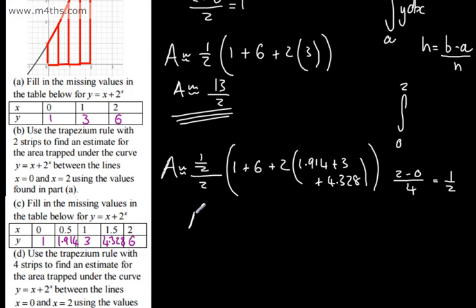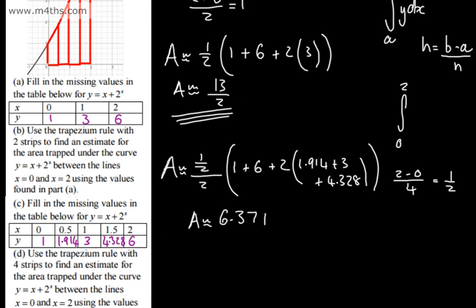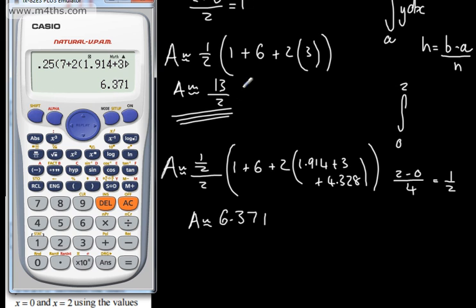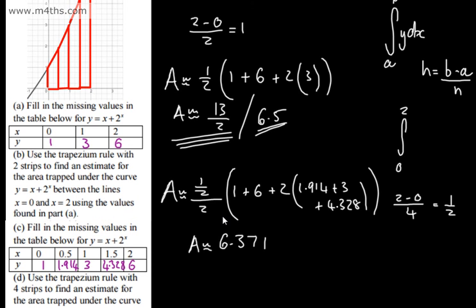So the area is approximately equal to 6.371. Comparing this to the two-strip estimate of 6.5, we can see that by increasing the number of strips, we're increasing the level of accuracy and getting closer to the actual area.